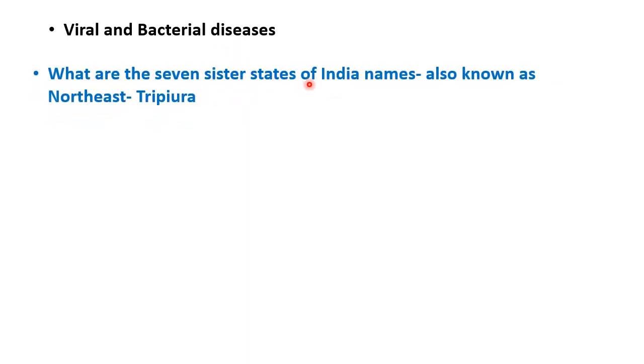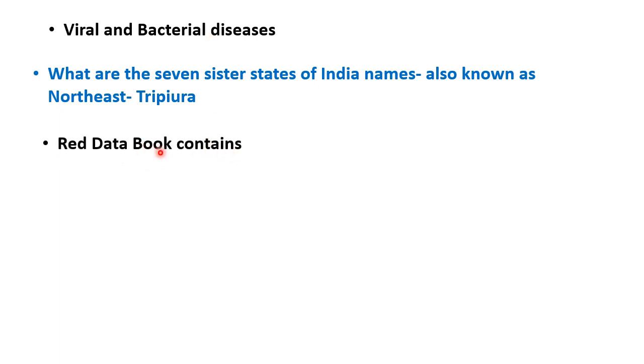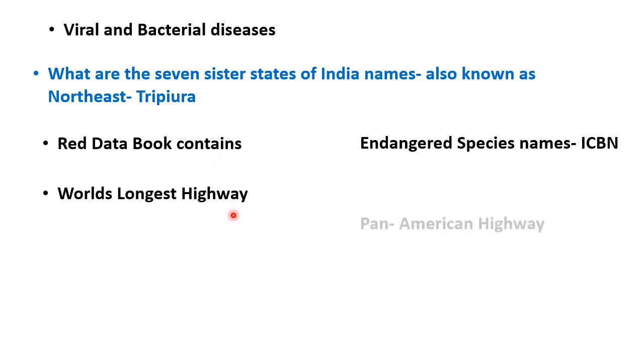Viral and bacterial diseases से questions थे। मैं जल्द एक video डालूँगी जिसमें viral diseases, bacterial diseases सारे cover होंगे, और 9th class की series भी जिसमें MCQs cover करेंगे — क्योंकि 9th-10th की general science books से ही MCQ आते हैं। Seven sister states of India — North Eastern states को seven sister states कहते हैं, जैसे Tripura। Tuberculosis किस bacteria से होता है? Mycobacterium से। Red data book में सारी endangered species के नाम होते हैं जो future में extinct हो सकती हैं — यह IUCN maintain करती है। World's longest highway — Pan-American Highway.